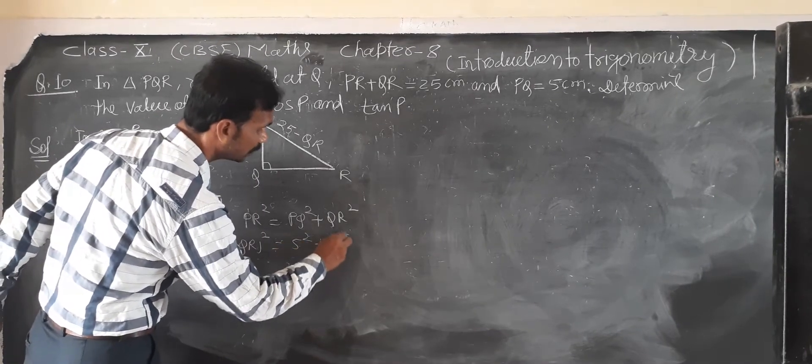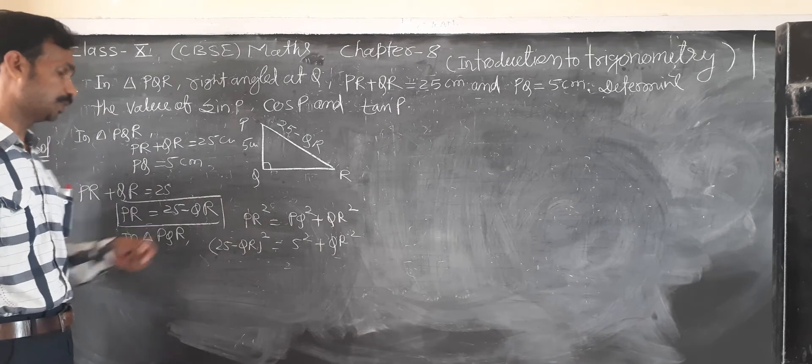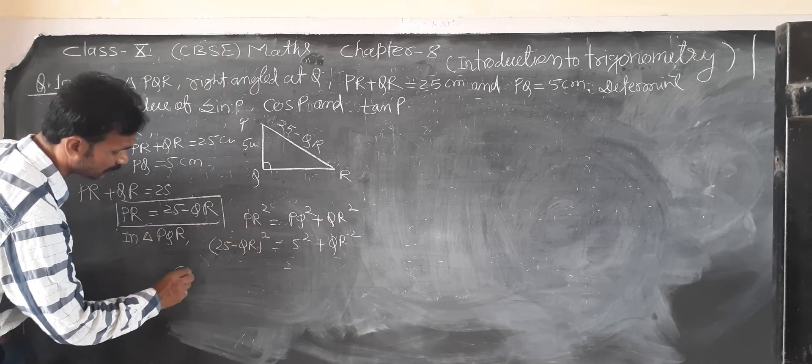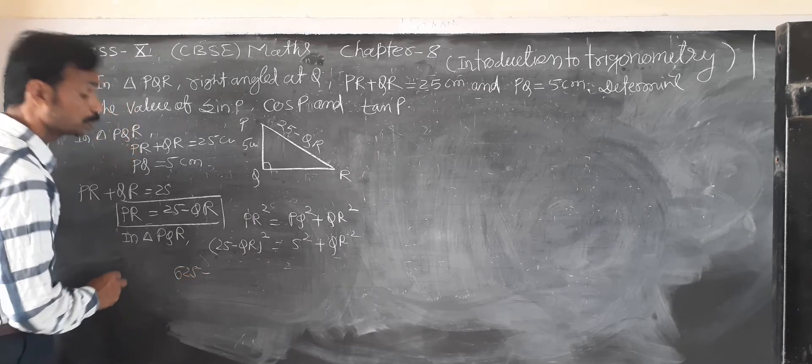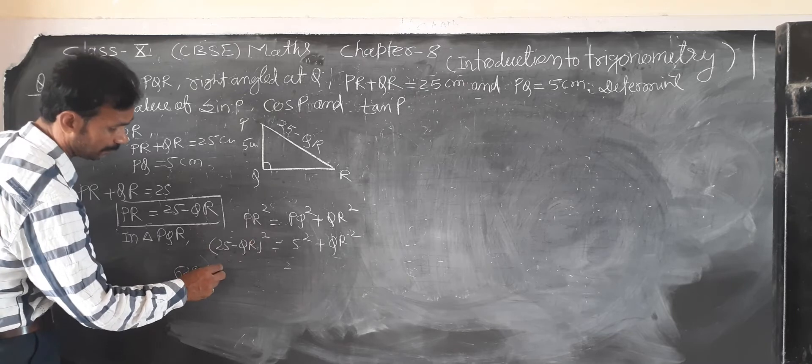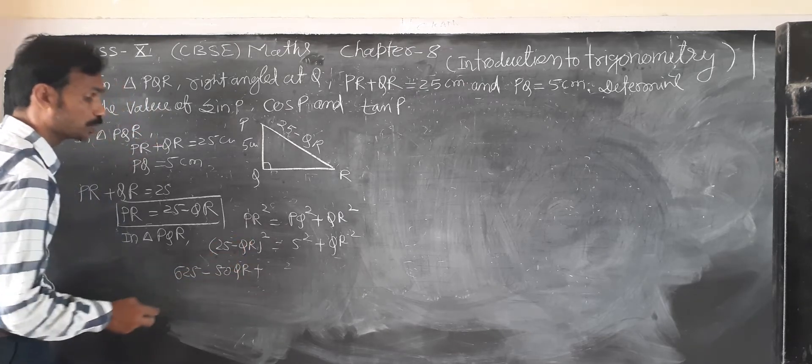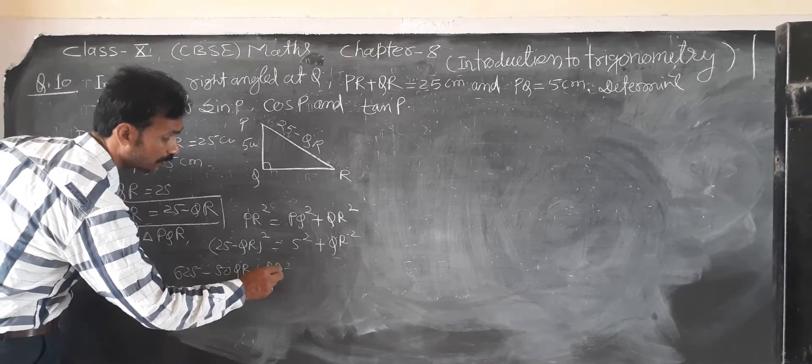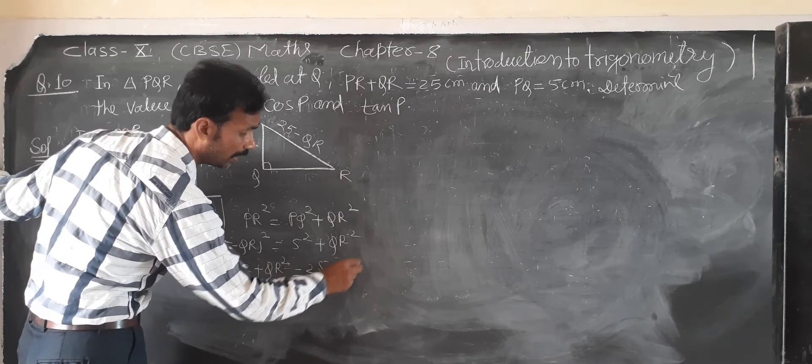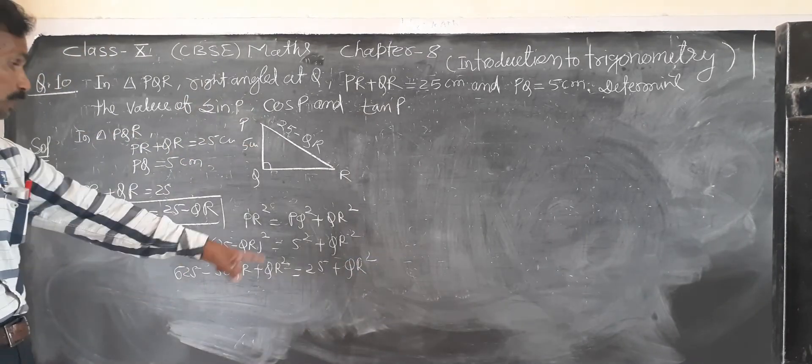So solve by A minus B, so A square is 25 square is 625, 2A means 25 and QR, so 2 times 25 is 50 QR, plus B square is QR square equal to 5 square is 25 plus QR square. Then transfer.